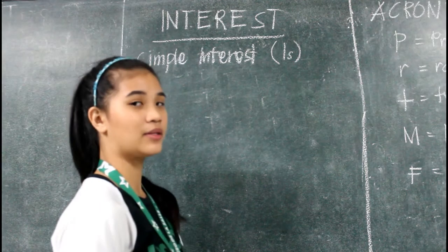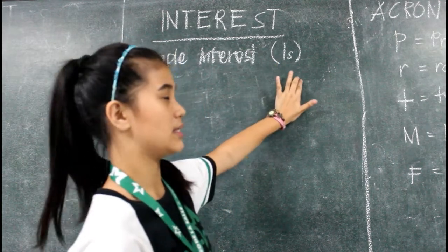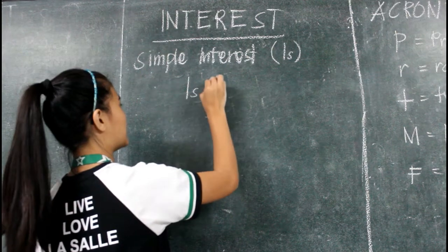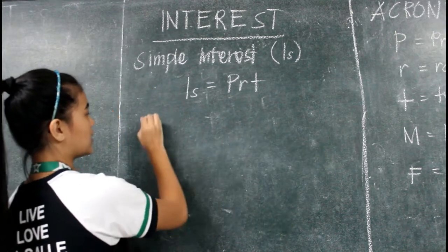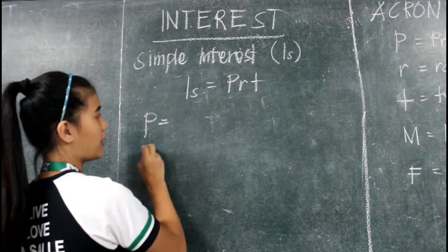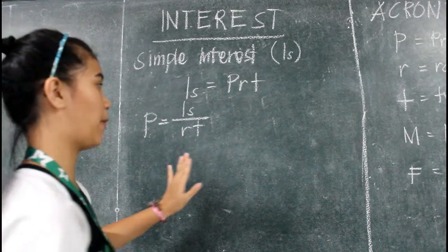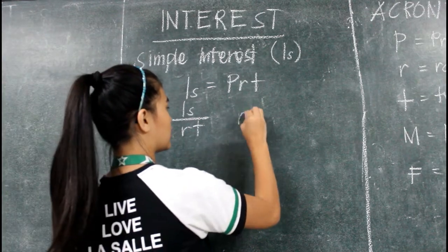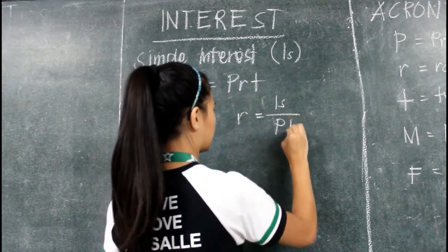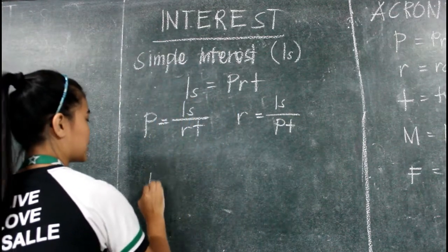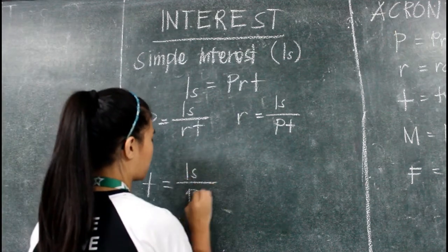Now we are going to talk all about simple interest. Simple interest has the symbol I sub S. The formula is principal times rate times T. From this formula, principal P is equal to simple interest over R, and rate R is equal to simple interest over principal times term of the loan.